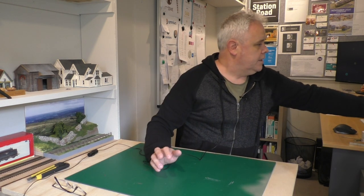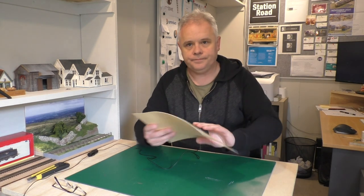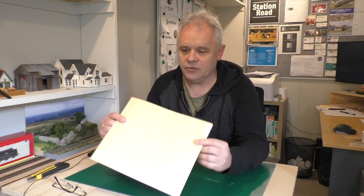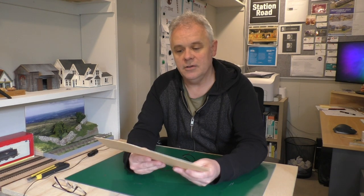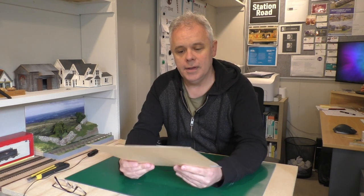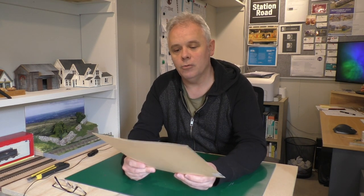So first of all we'll have a look at the materials that I used. Essentially what I use for the palings is a very thin wood veneer. I bought this not from a model shop but from an art supply store, and according to the sticker it's called basewood ply and it's 0.6mm, so it is quite a thin veneer. Now this is for the palings.